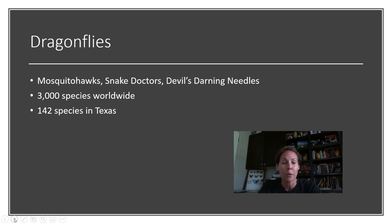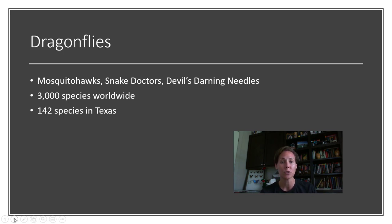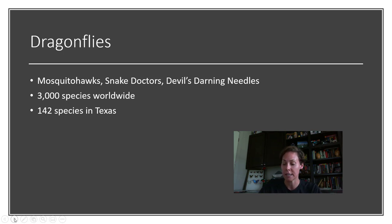Dragonflies have a number of funny names. They have been known to be called mosquito hawks, snake doctors, and devil's darning needles. There are about 3,000 species worldwide and we are lucky to have 142 of those species in Texas. I'm not going to be covering all 142 species — we're really just going to be covering maybe 10 or so that are really common to the central Texas area or are common across the state.